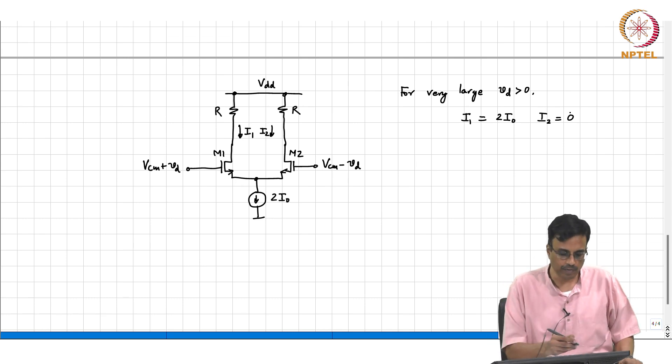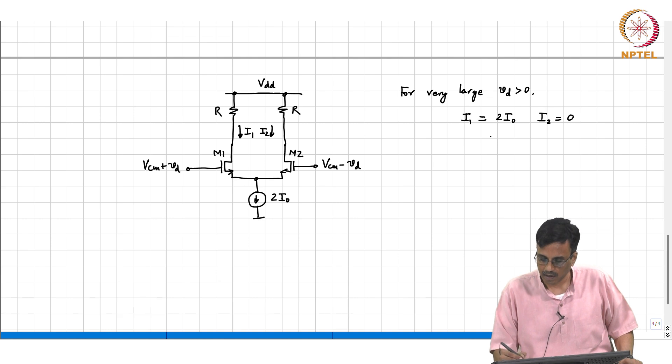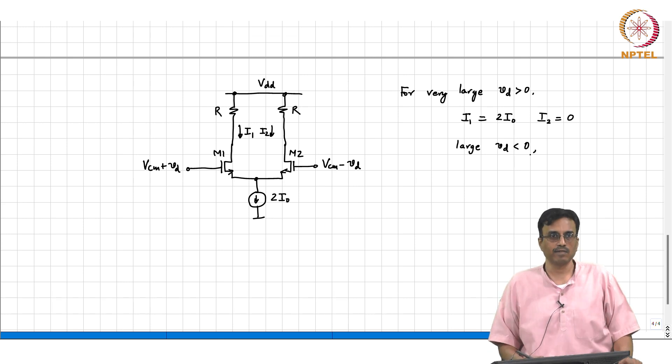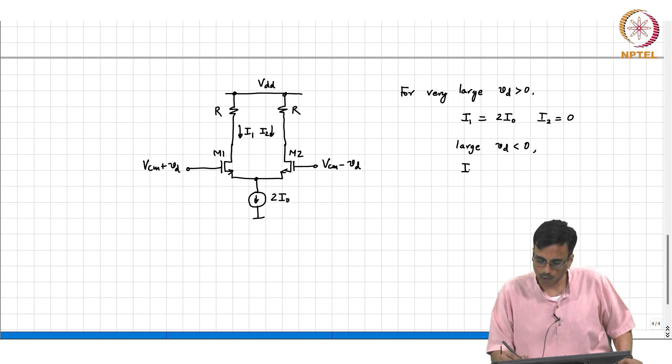Likewise, for large Vd less than 0, what comment can we make? I1 becomes 0 now and I2, M2 steals all the current.